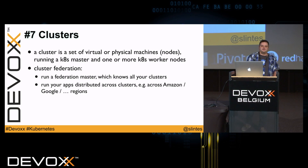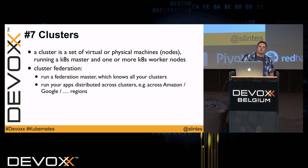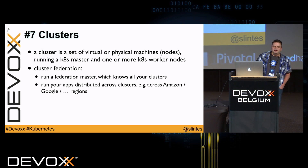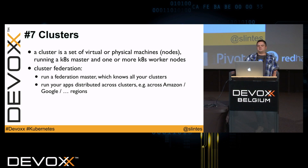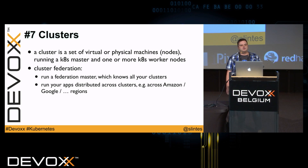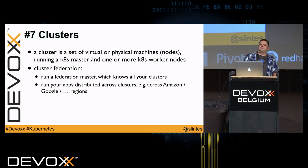Clusters are a set of virtual or physical machines. You need to run one Kubernetes master and at least one Kubernetes worker node. There is also a newer thing called cluster federation — you can create a federation master, register all your clusters, and distribute your applications across different clusters. This is useful if you have, for example, a cluster at Amazon North America and one at Amazon Europe.